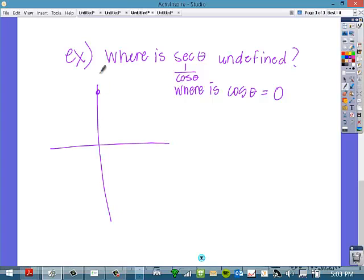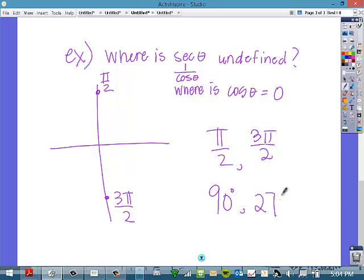Cosine of theta is equal to 0 here, at π over 2, and down here at 3π over 2. So, where is secant undefined? Secant is undefined at θ equal to π over 2, aka 90 degrees, and at 3π over 2, aka 270 degrees.